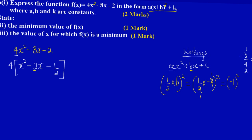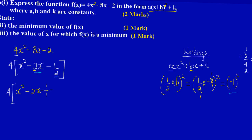Now I'm going to add this value of 1 to my expression after the second term, and then subtract it to keep the expression balanced. So inside the bracket I have: 4 times [x² - 2x + (-1)² - ½ - (-1)²]. I add the negative 1 squared after the x terms, and subtract the same value near the constant term, then close the bracket.